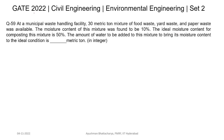Question number 49 came in year 2022, Set 2. At a municipal solid waste handling facility, a 30 metric ton mixture of food waste, yard waste, and paper waste was available. The moisture content of this mixture was found to be 10 percent. The ideal moisture content for composting is 50 percent. The question asks: what is the amount of water to be added to bring its moisture content to the ideal condition?